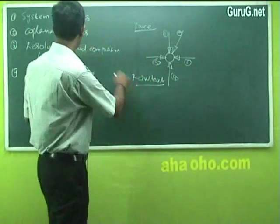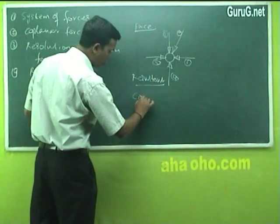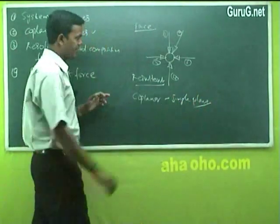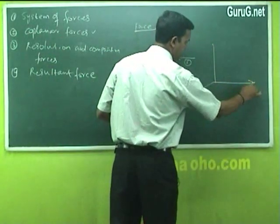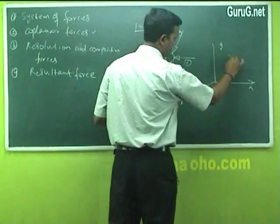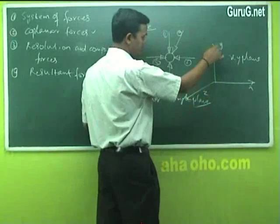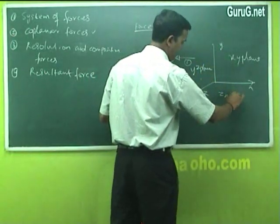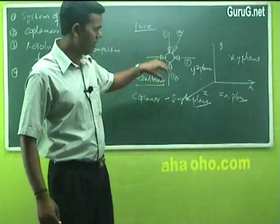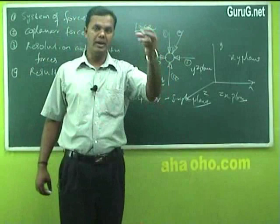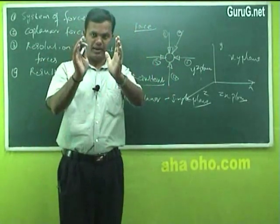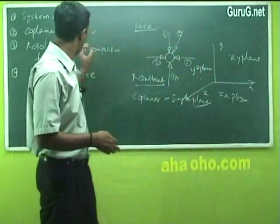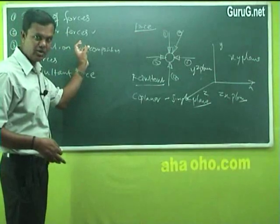Now, if I take coplanar — the main word says coplanar — which means a single plane. We generally define planes as x, y, and z: the xy plane, yz plane, and zx plane. A number of forces may act on a body in different planes — it may be acting in one plane, in more than one plane, or three planes also. Coplanar means when a number of forces act on a single plane.